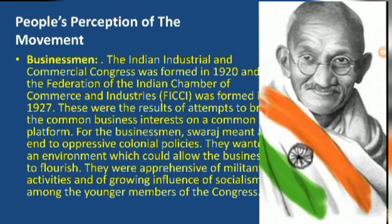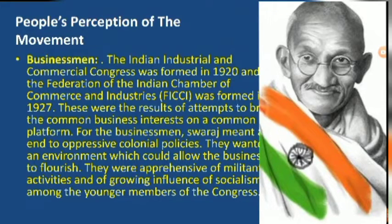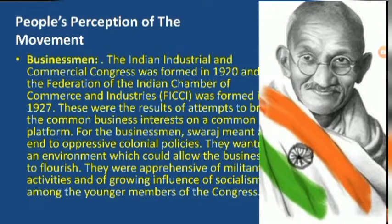For the business class, the Indian Industrial and Commercial Congress was formed in 1920 and the Federation of Indian Chamber of Commerce and Industries was formed in 1927. These were attempts to bring common business interests on a common platform. For businessmen, Swaraj meant an end to oppressive colonial policies. They wanted an environment that allowed business to flourish but were apprehensive of militant activities and growing socialist influence among younger Congress members.